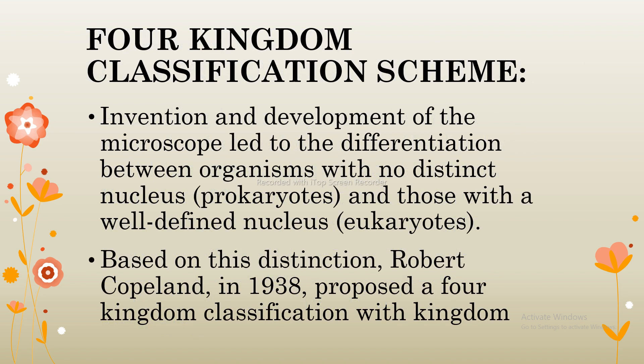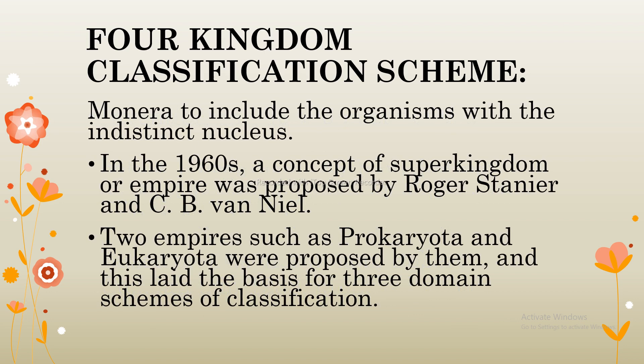Next, I will discuss the four-kingdom classification scheme. The invention and development of the microscope led to differentiation between organisms with no distinct nucleus — prokaryotes — and those with a well-defined nucleus — eukaryotes. Based on this distinction, Herbert Copeland in 1938 proposed a four-kingdom classification with Kingdom Monera to include organisms with an indistinct nucleus. In the 1960s, a concept of super kingdom or empire was proposed by Roger Stanier and C.B. van Niel. Two empires — Prokaryota and Eukaryota — were proposed, laying the basis for the main schemes of classification.